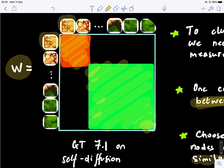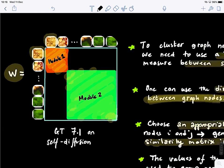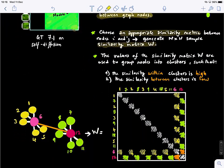And these actually, you can think about them as modules. So now the values of the similarity matrix W are used to group nodes into clusters such that the similarity within clusters is high, and the similarity between clusters is very low.